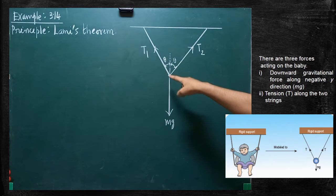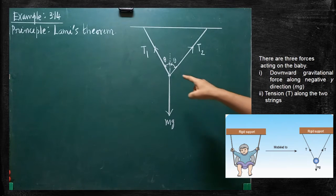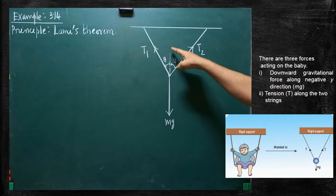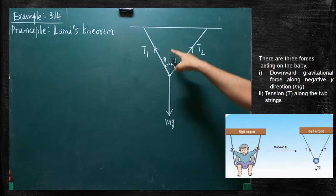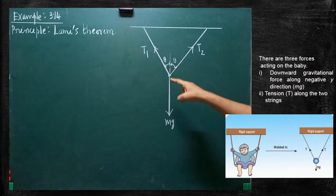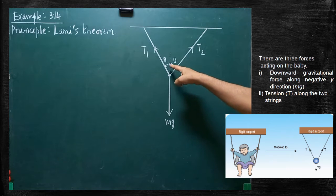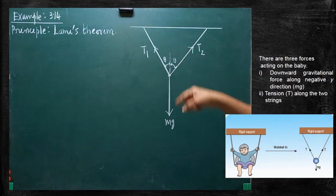So, finally, the system is in equilibrium — the forces are in the equilibrium condition. For the sake of convenience, draw a dotted line here. This line acts as a bisector. So the angle on one side can be taken as theta, and the same theta will be on the other side. The total angle between the two chains will be 2 theta.